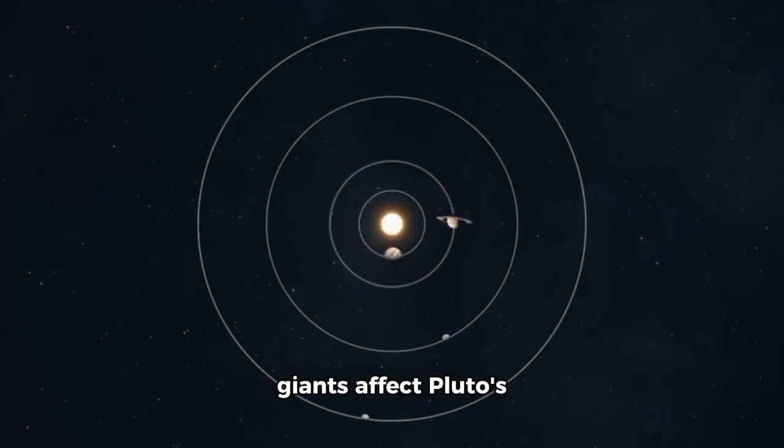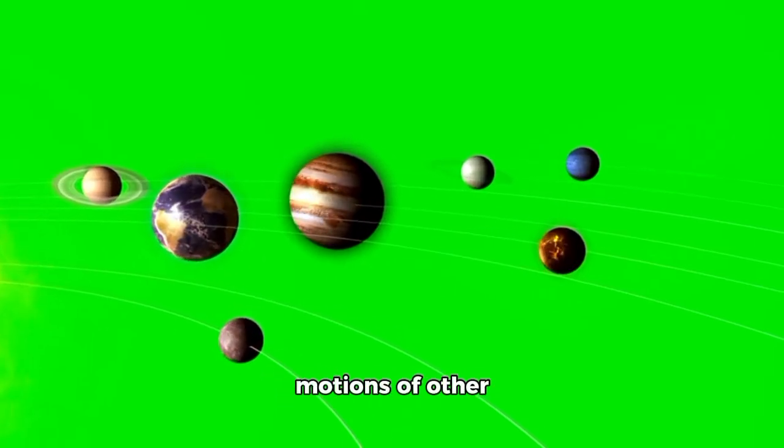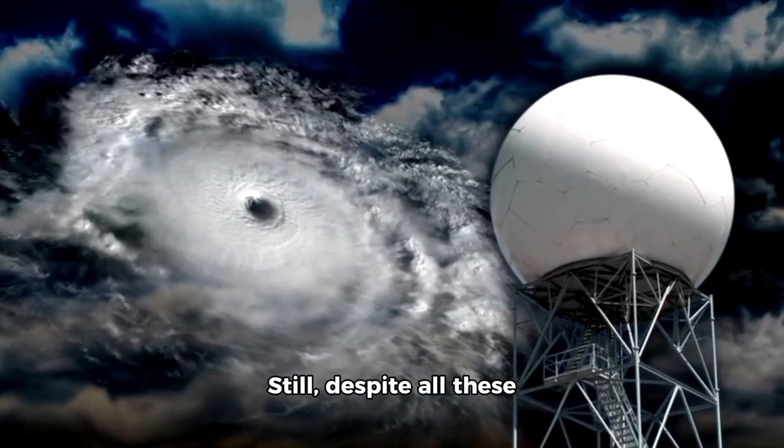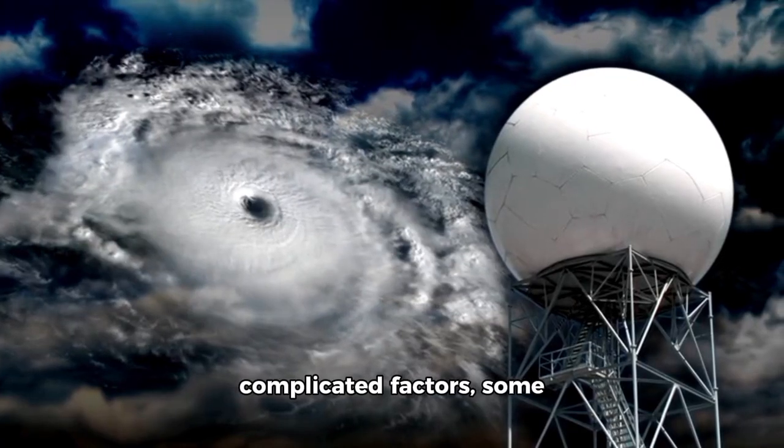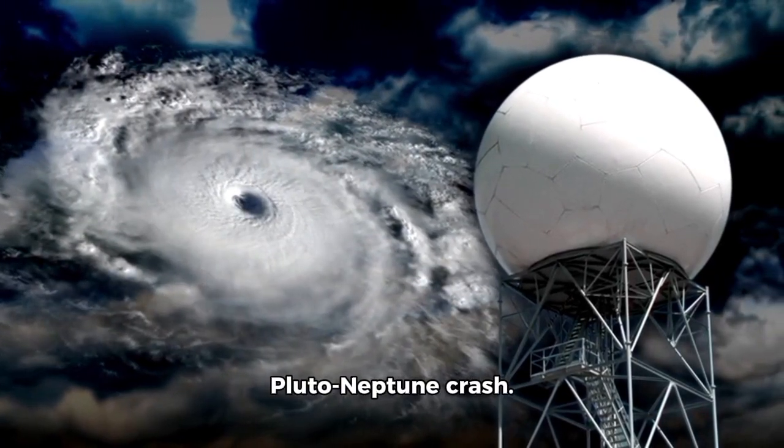Studying how the gas giants affect Pluto's orbit helps us comprehend how our solar system works. Each planet's mass and location change the motions of other objects in small ways. Still, despite all these complicated factors, some top scientists keep warning about a possible Pluto-Neptune crash.